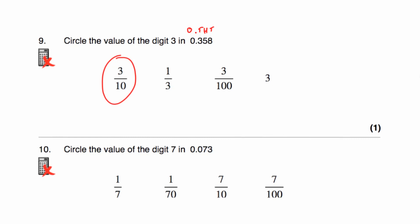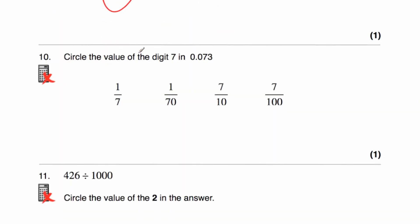Question number 10 says circle the value of the digit 7 in the number 0.073. So we've got our ones or our units, decimal point, then our tenths, our hundredths, and our thousandths. We've got 7 in the hundredths column, so it's 7 hundredths. So let's circle 7 hundredths.